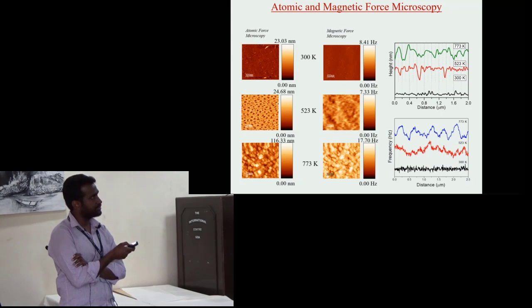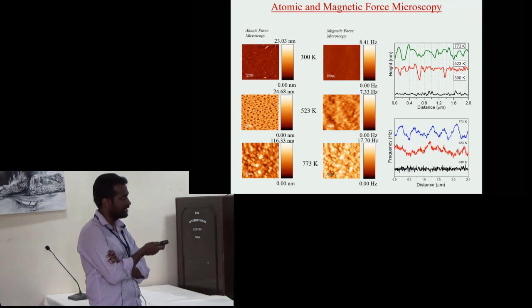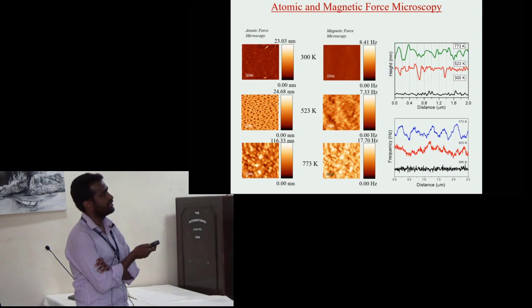This effect of substrate temperature can also be observed in AFM measurement. The AFM image shows increasing substrate temperature the grain size increases, and at 773 Kelvin there are big grains along with some smaller grains.